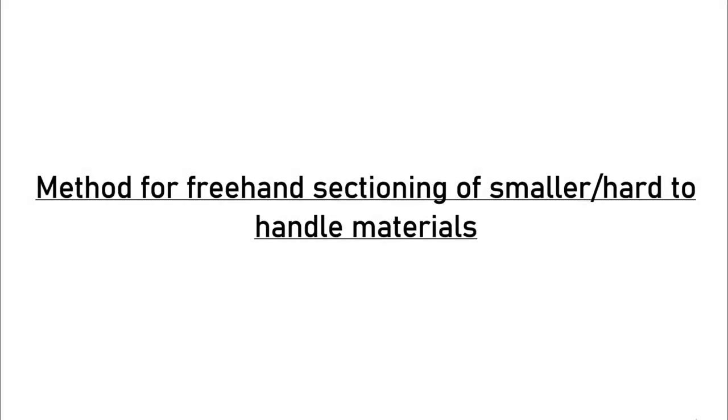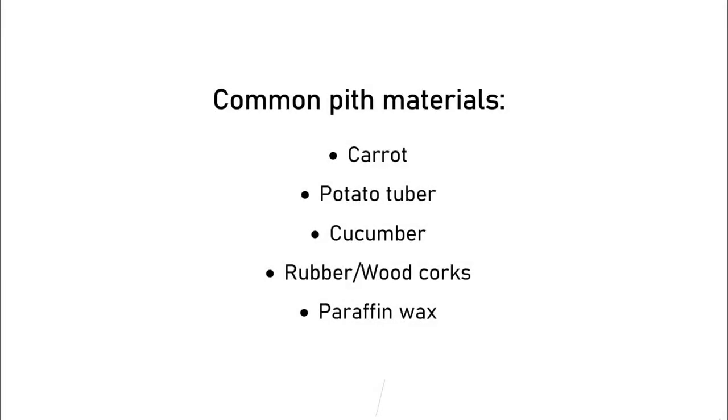For tiny materials that are close to impossible for sectioning using the previously described methods, a pith material is often employed to add size and thickness to the material so that it becomes more convenient to handle. Some commonly used pith materials include carrot, potato tuber, cucumber, rubber or wooden corks, and even paraffin wax blocks. I'll be using potato tuber in this video.